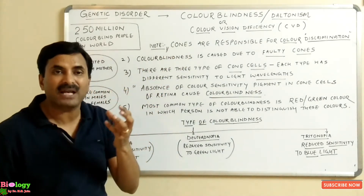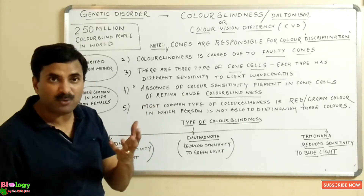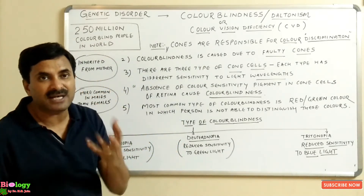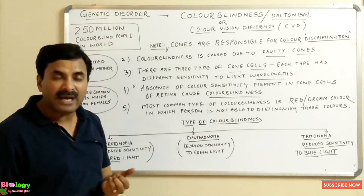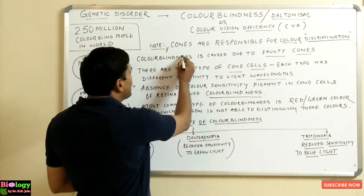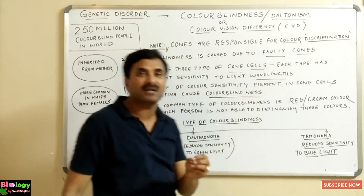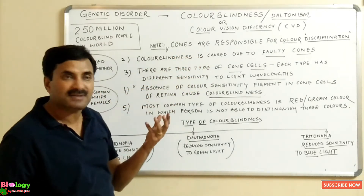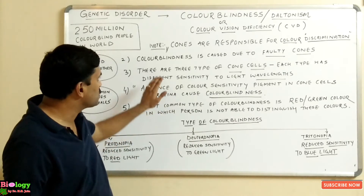We know very well that we have cones and rods in our eyes, in the retina. For color discrimination, we are able to recognize different colors during daylight because of the cones. Cones are responsible for color discrimination. In colorblindness, the cones become faulty. When there is any defect in the cones, the person is not able to discriminate between different colors and becomes colorblind.